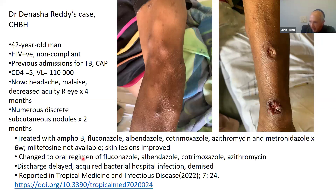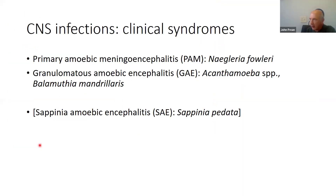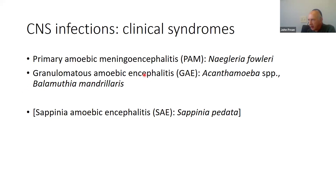That case was written up and published. The main focus now turns to central nervous system infections. We're looking at primary amoebic meningoencephalitis (PAM), where Naegleria fowleri is the organism, and granulomatous amoebic encephalitis (GAE), where both Acanthamoeba and Balamuthia cause disease. Sapinia is always included, although there has only ever been one case of this CNS infection.